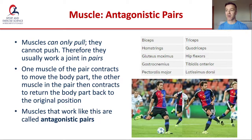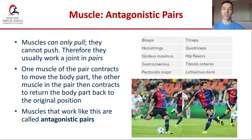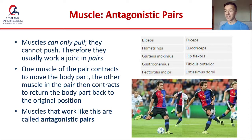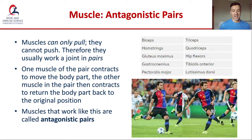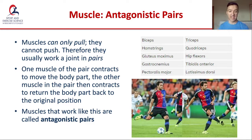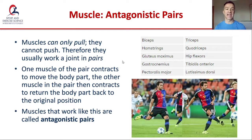There are many common examples of antagonistic pairs around the body — the biceps and triceps, the hamstrings and the quadriceps in your leg, your glutes and your hip flexors, your gastrocnemius and your tibialis anterior in your lower leg, or your pecs and your lats. For example, a player going to kick a ball: at the hip joint, the glutes work to extend the hip and the hip flexors work to flex it. At the knee, the hamstrings flex it and the quadriceps extend it.